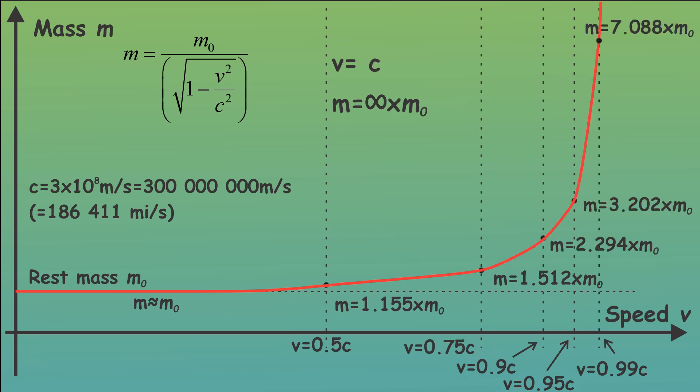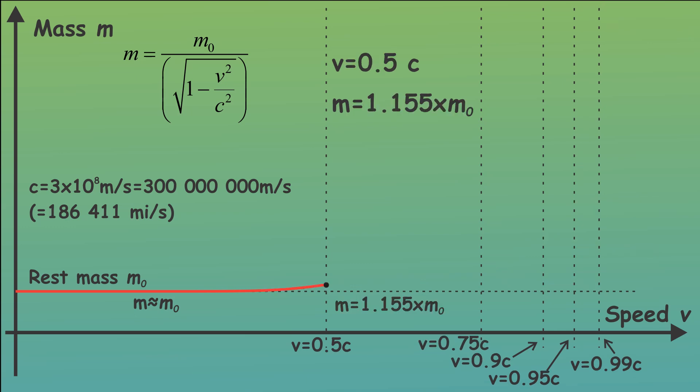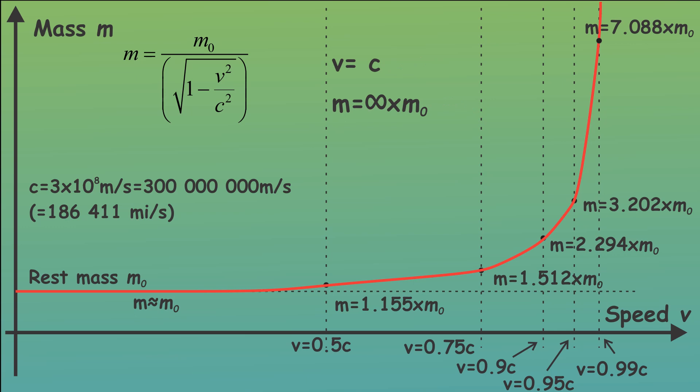This change in mass isn't linear. As the speed gets closer to the speed of light, the mass gets closer to an infinite mass.